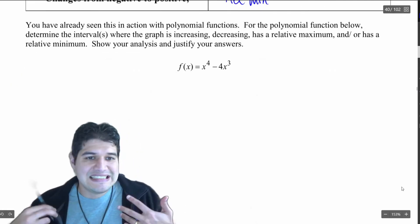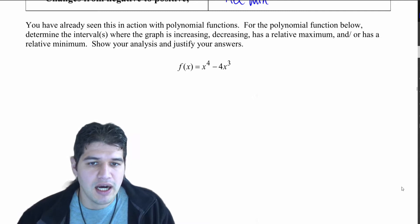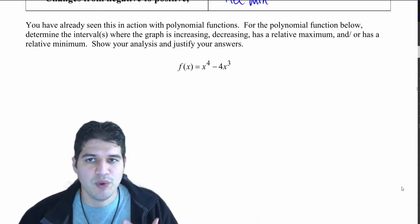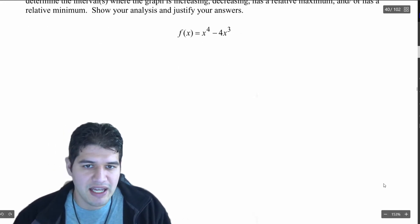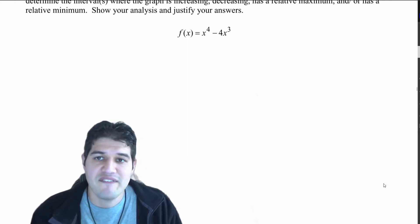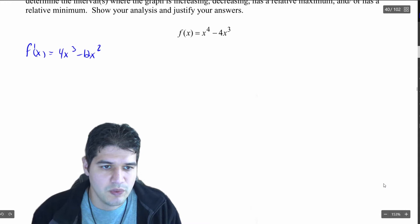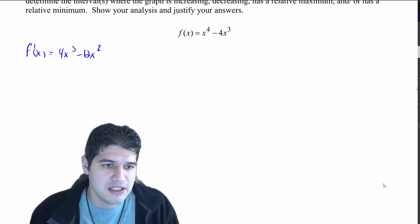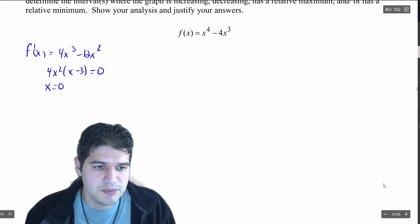We've already seen this with polynomial functions, so let's recap. We want to find increasing/decreasing behavior and identify where the relative max or relative minimum is. Here we've got f of x, and we start by finding the first derivative. So f prime of x equals 4x cubed minus 12x squared. We find the zeros by factoring out 4x squared to get x minus three, set equal to zero. The zeros are x equals zero and x equals positive three.